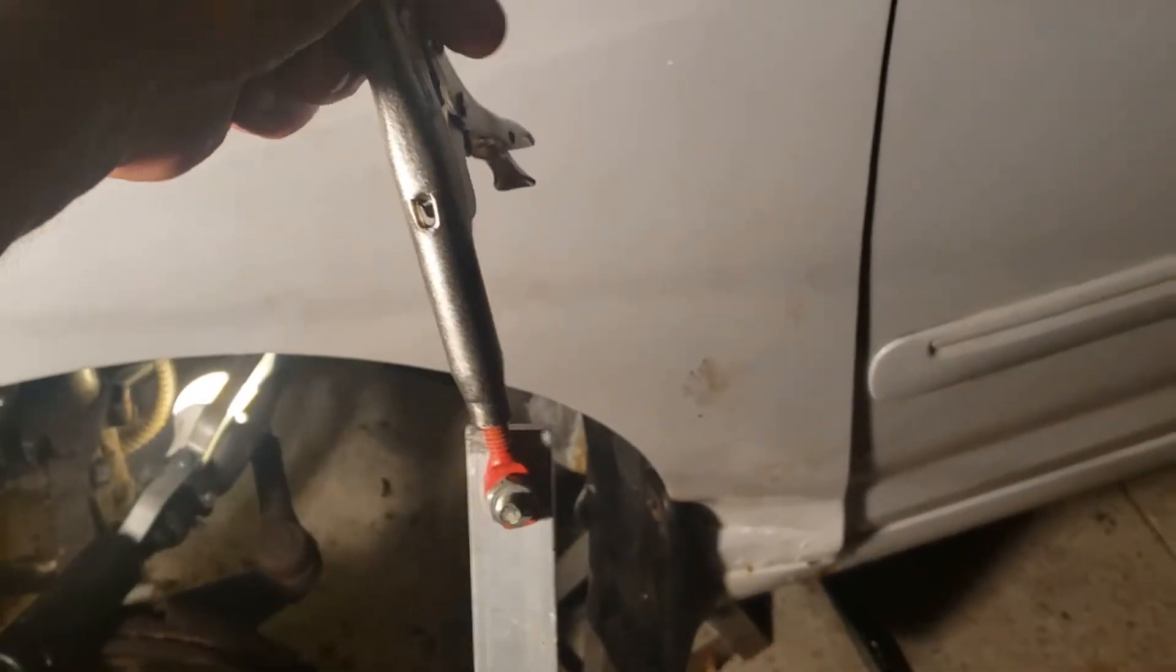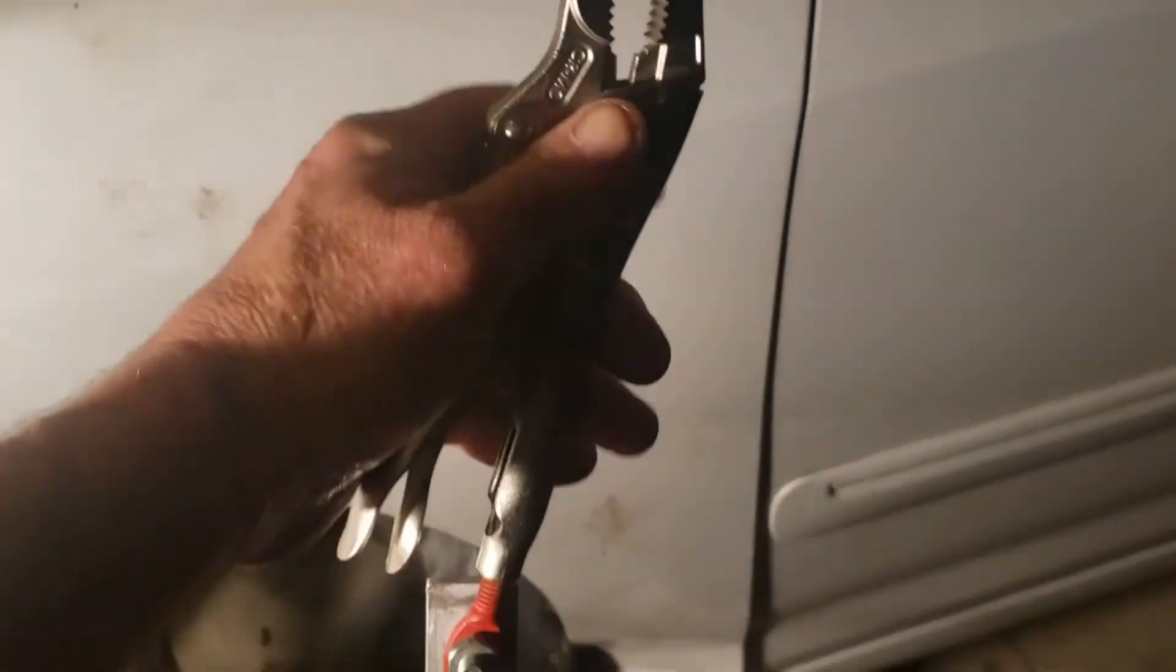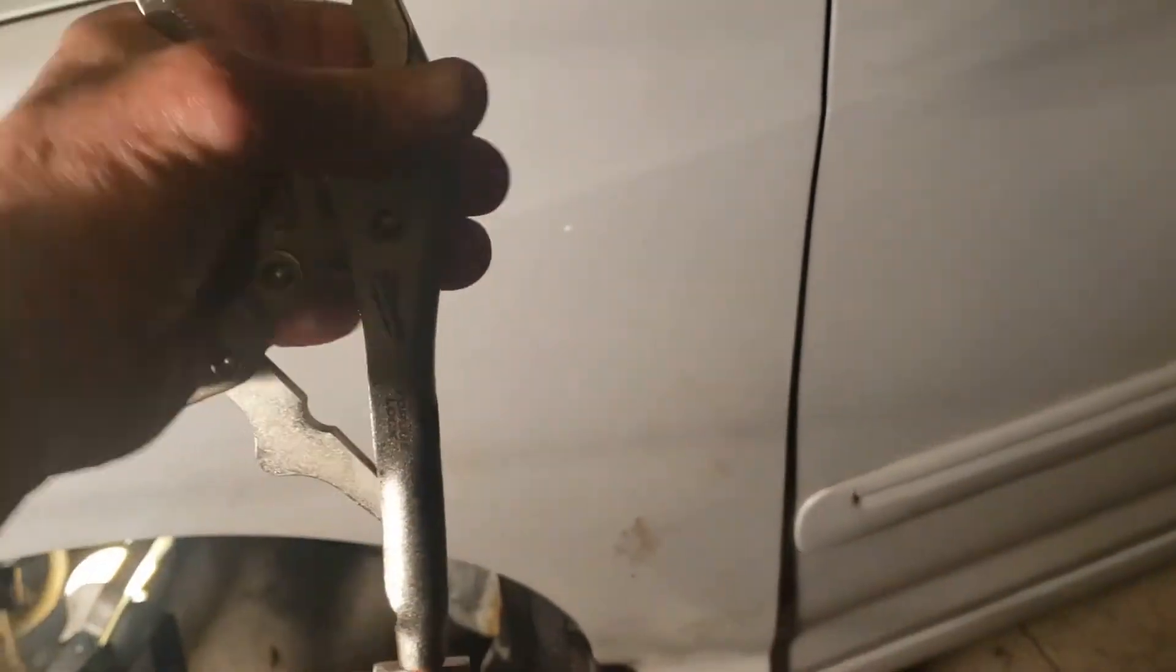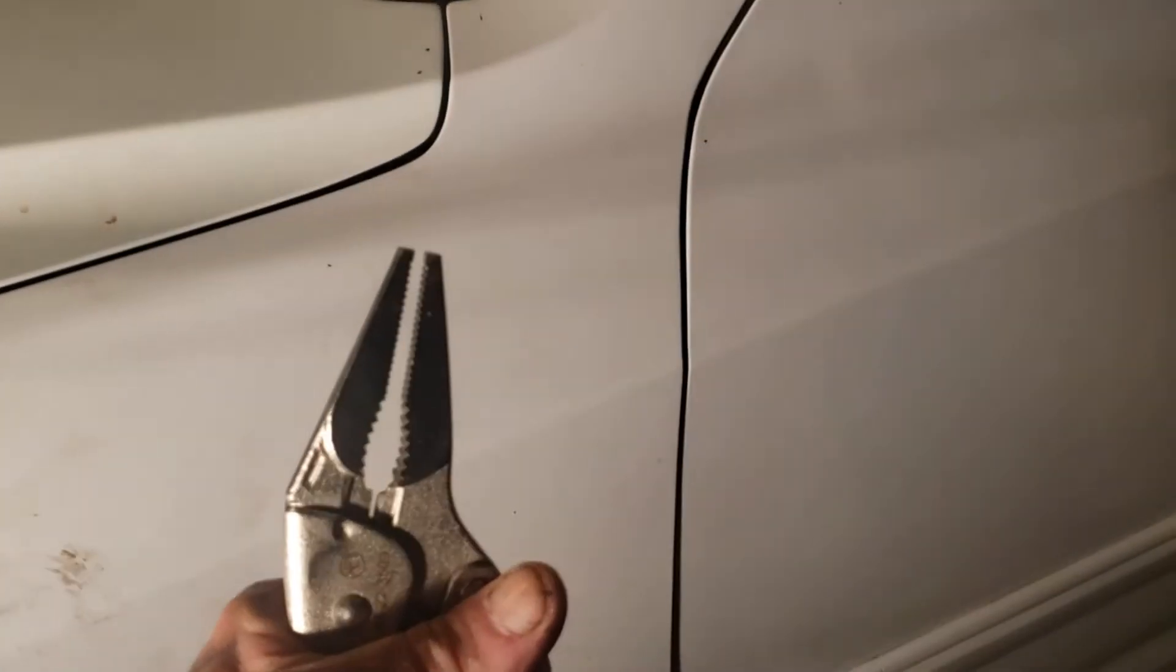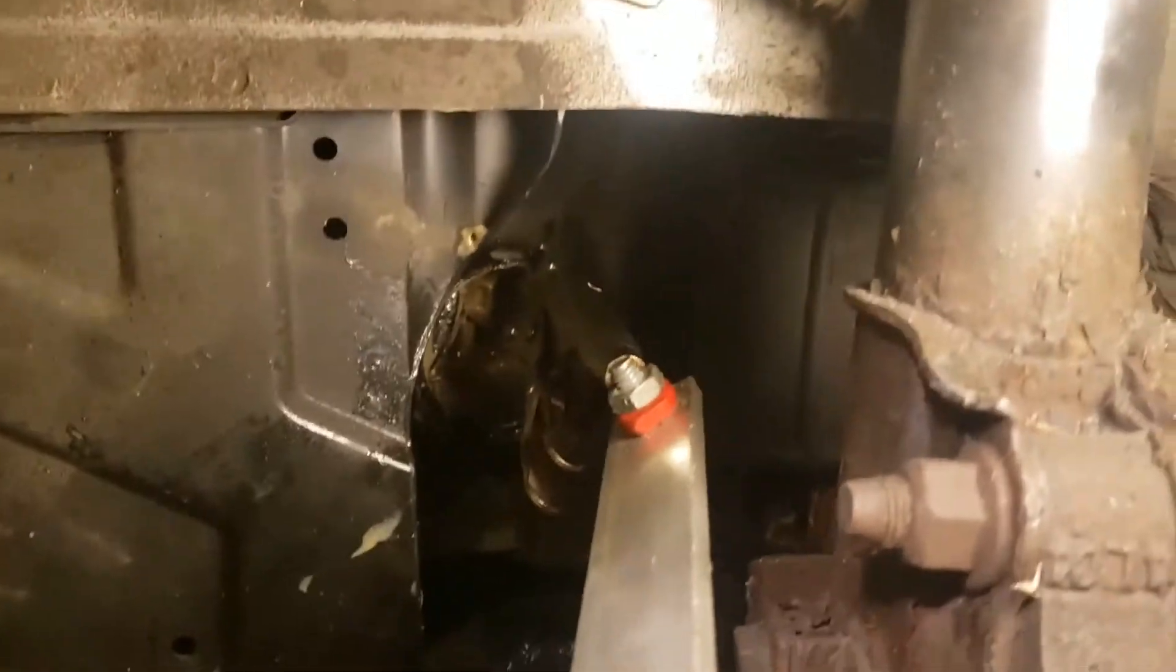We need to open the jaws a little bit. We'll clamp, that's a little too much, tighten it back up. I think right about, yeah we'll try it there. So you can see we have our vice grips attached.